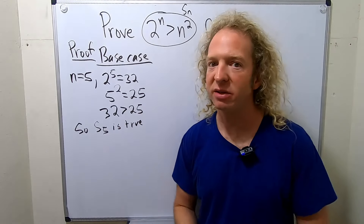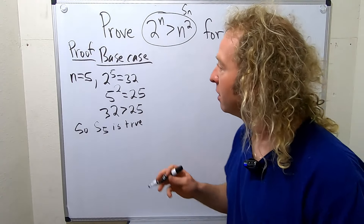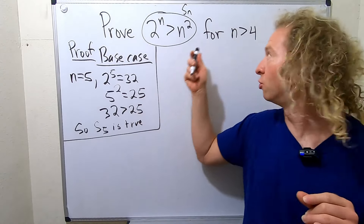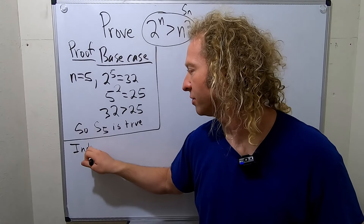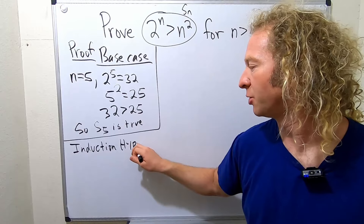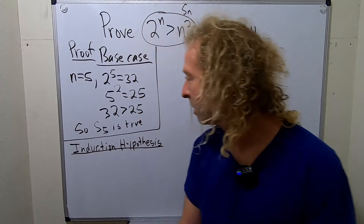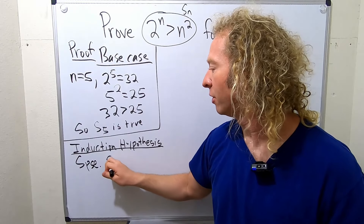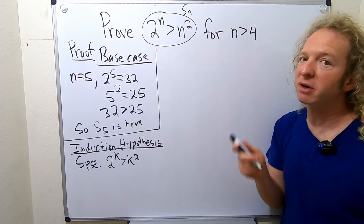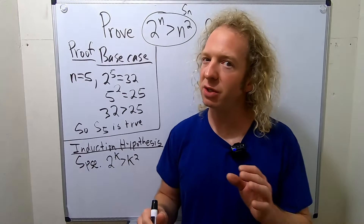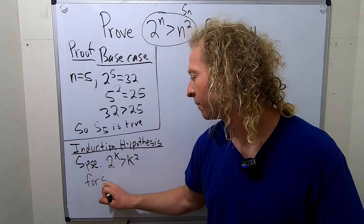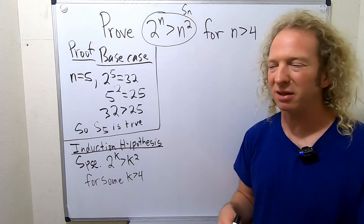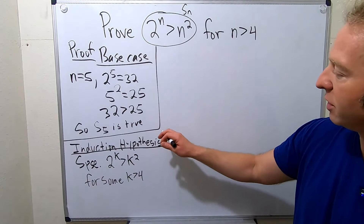Most people can do the base case; the hard part is the inequality step. Now we do the induction hypothesis, which is also pretty easy. We assume the statement is true for some positive integer greater than 4. So: suppose 2 to the k is bigger than k squared, for some k bigger than 4. In this type of inequality proof, you're actually going to use that assumption very heavily.